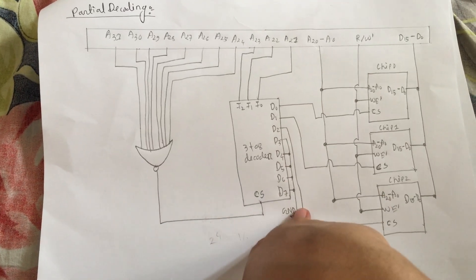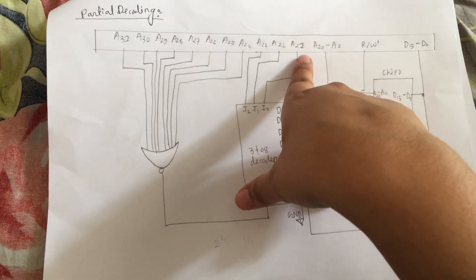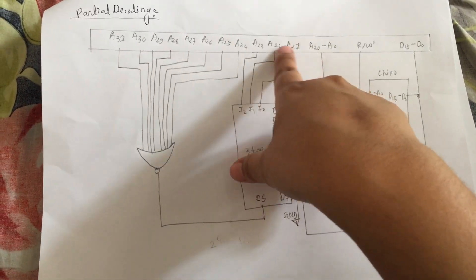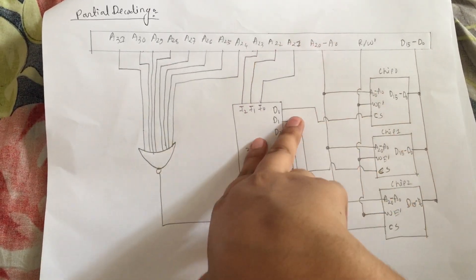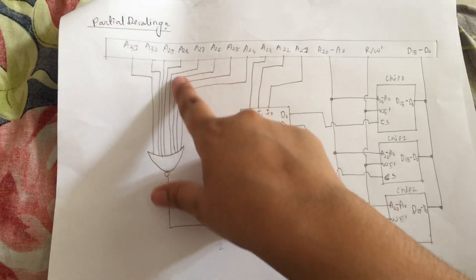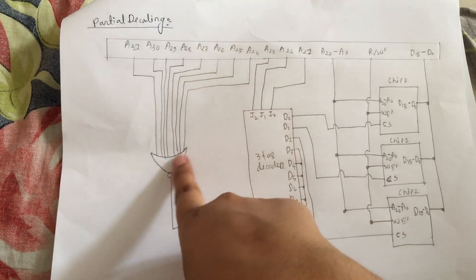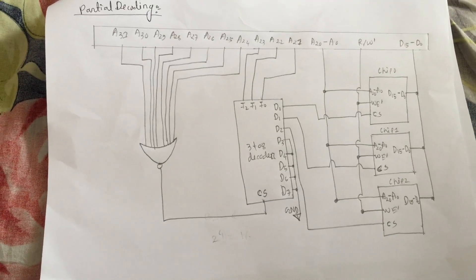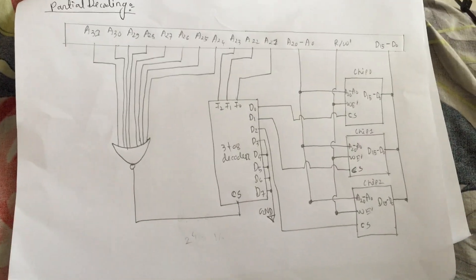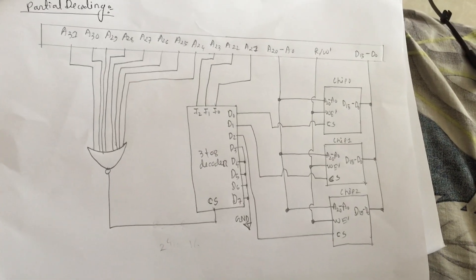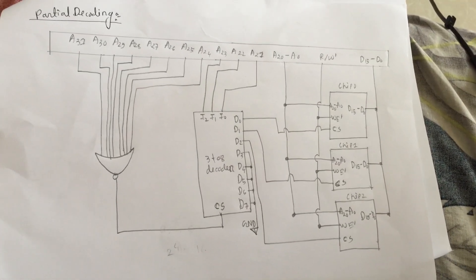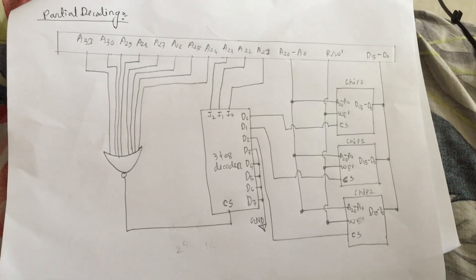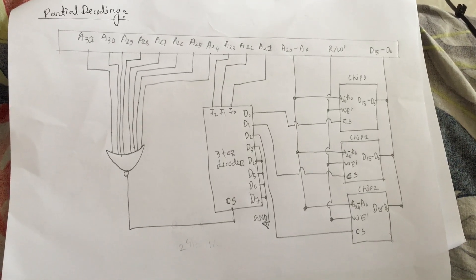Since it is a 3-to-8 decoder, these three pins go to the corresponding pins, and the others go through a NOR gate. So no resources are being wasted in partial decoding. If you have any questions, write a comment and don't forget to subscribe. Thank you.